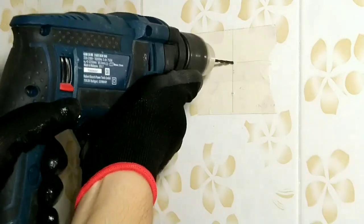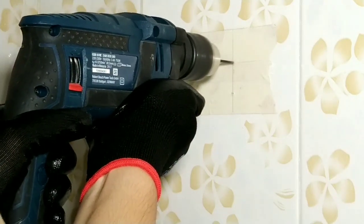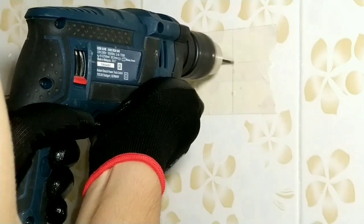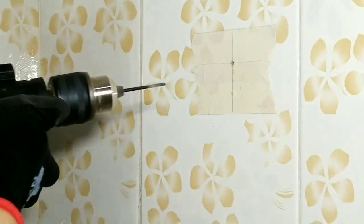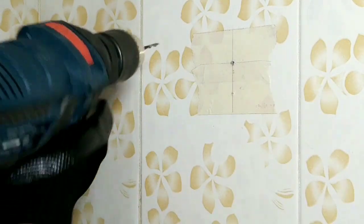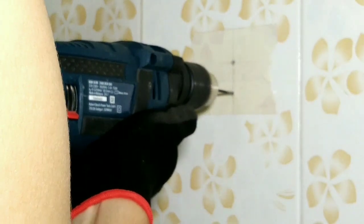Drill through the tile slowly. Set your drill to a low speed and apply modest pressure to the surface. Allow the drill to work slowly rather than push hard and crack the tile. This may take three or four minutes.